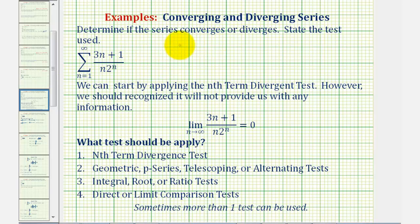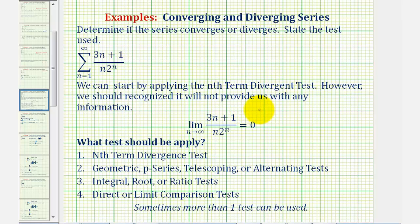Welcome to another example on determining if a given infinite series converges or diverges. Normally we start by applying the nth term divergent test. However, we should recognize that in this case, the nth term divergent test will not provide us with any information.